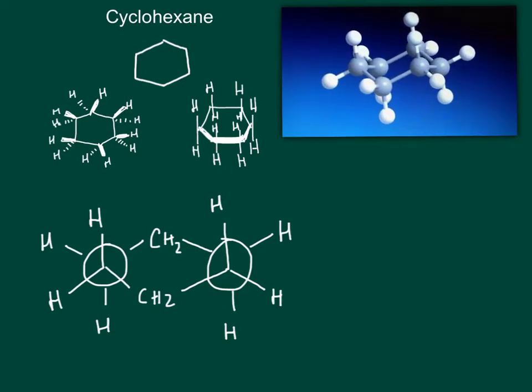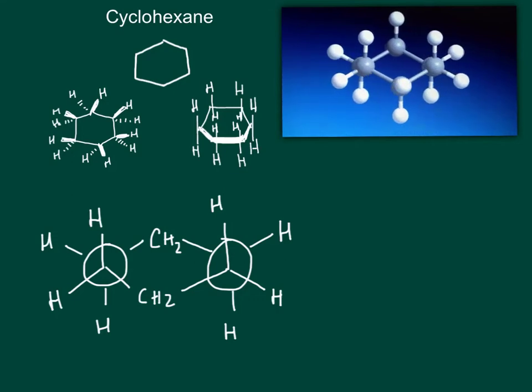If we look at this 3D model of cyclohexane, we can see that a certain perspective views down two carbon-carbon bonds simultaneously, this one right here and this one right here, to give the Newman projection shown.